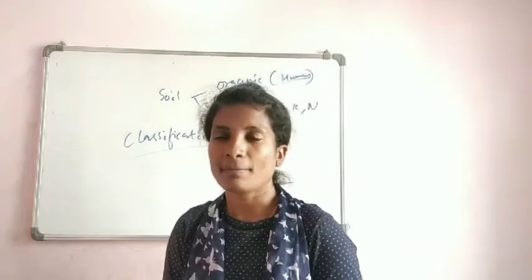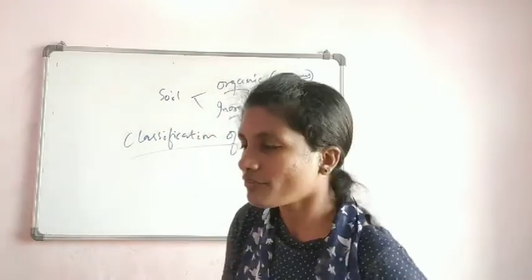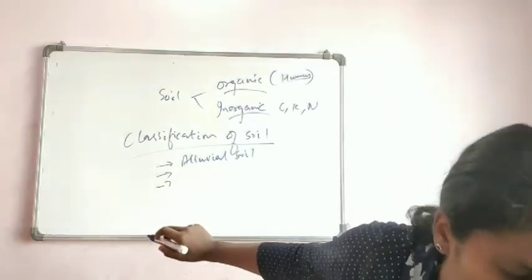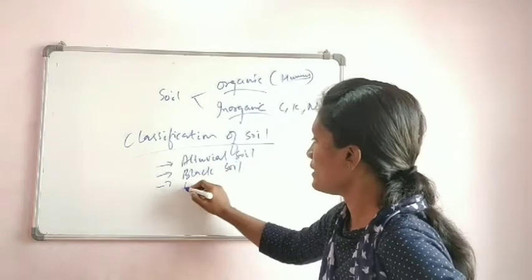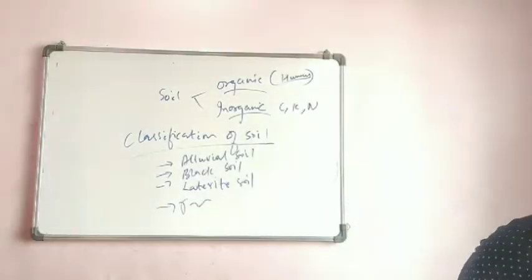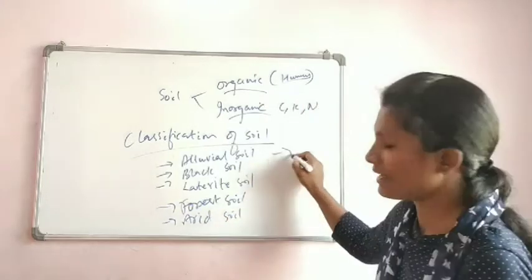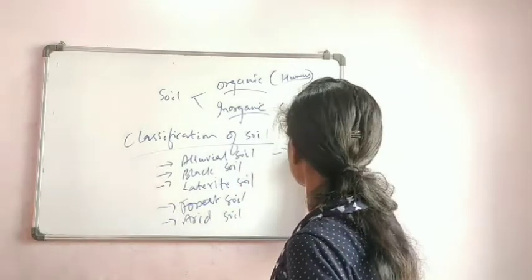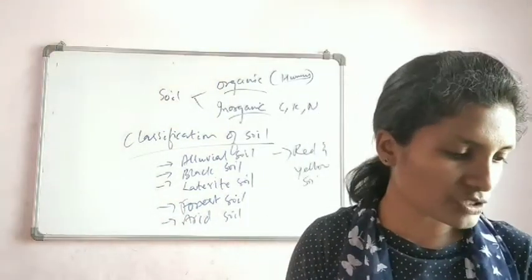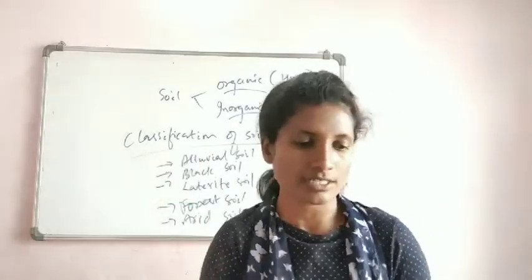Soil can be classified depending on its texture, color, fertility, and the kind of plants that grow in that environment. There are six types of soil in our syllabus: alluvial soil, black soil, laterite soil, forest soil, arid soil, and red and yellow soil. We will study each one — their properties, what crops can be grown, and in which regions they are found.